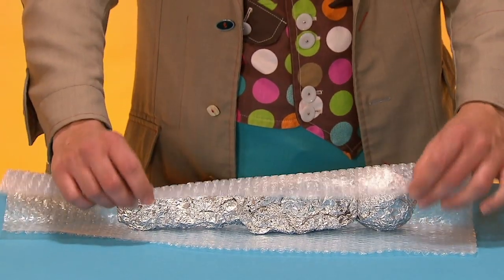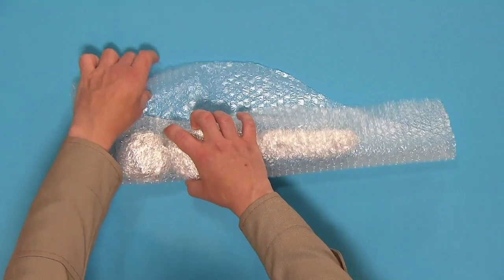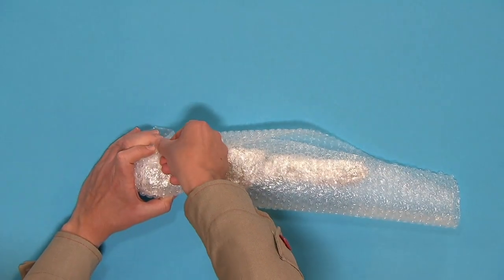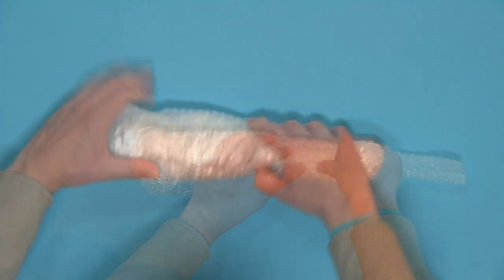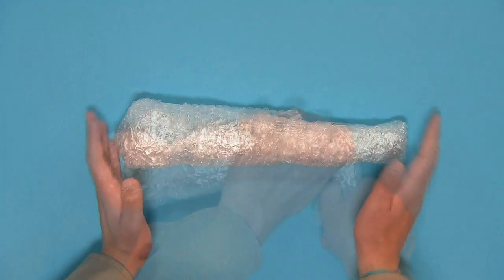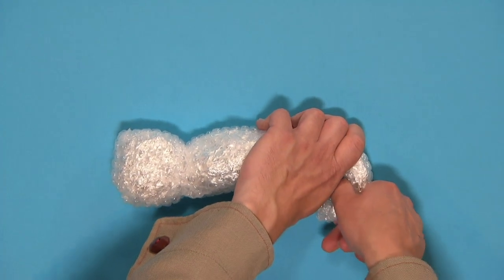Now cover your chameleon in some bubble wrap. Tape it down as you go, making sure that it's nice and tight. When your chameleon is covered, bend the tail into a curl shape like this.